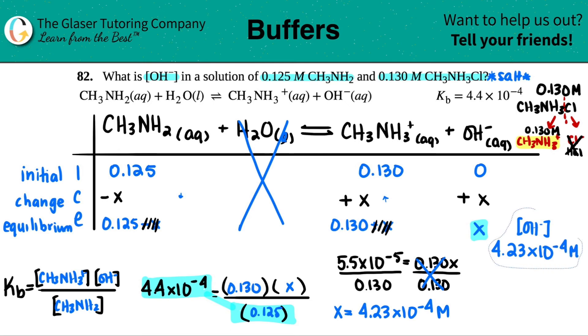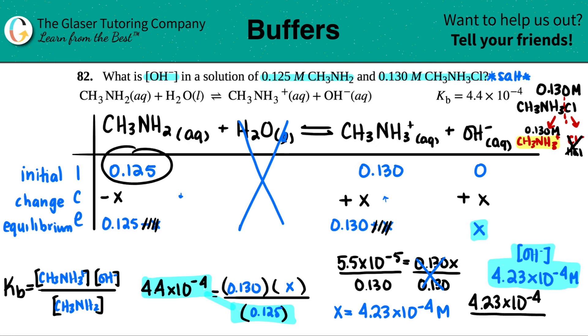Now let's do that check that I was talking about a little bit while ago. This check is called the 5% rule. Basically what you're going to do is you're going to make a percentage and hopefully that your number is five or lower. So you're going to take the x value that you found, 4.23 times 10 to the negative fourth, and you're going to divide by always the initial reactant, so 0.125, and you're going to multiply by 100. If this answer is less than 5%, we're good. We assumed correctly and our answer that we got is good.